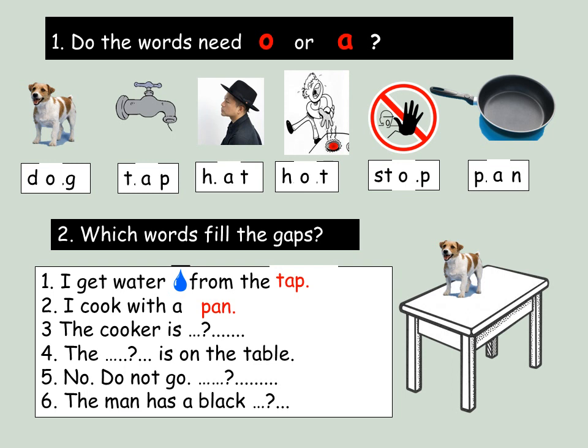Number three. The cooker is hot. The is on the table. Dog. No, do not go. Stop. The man has a black hat.